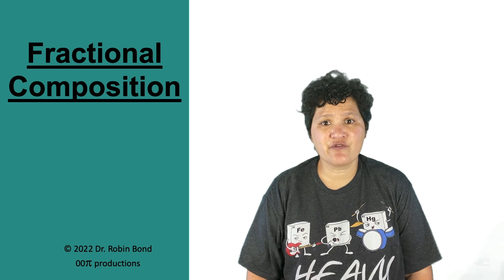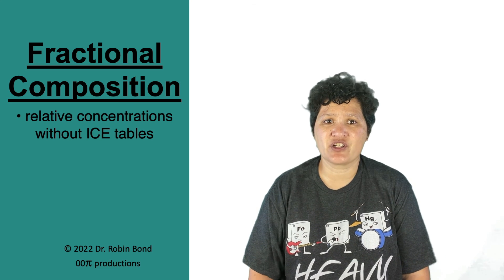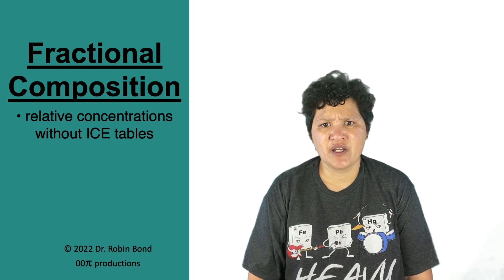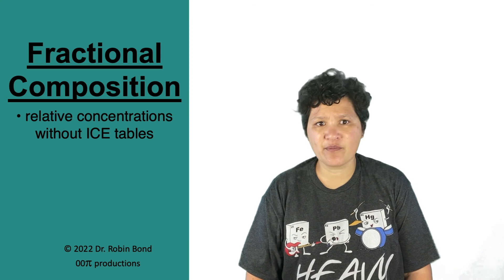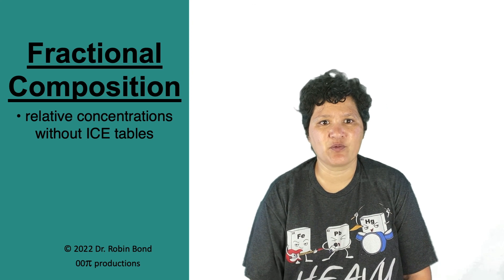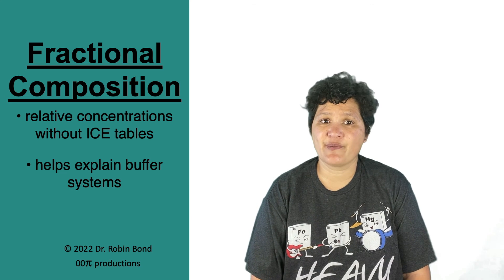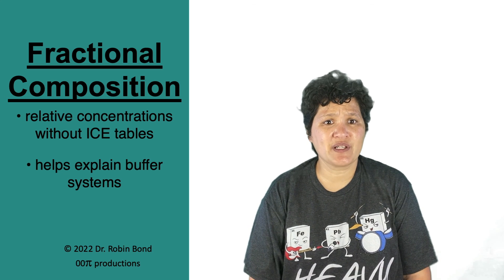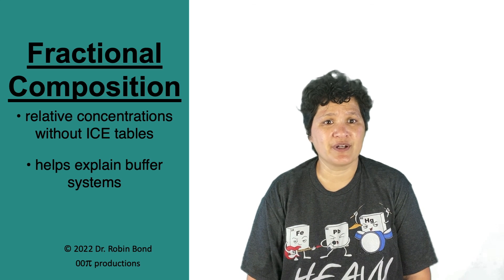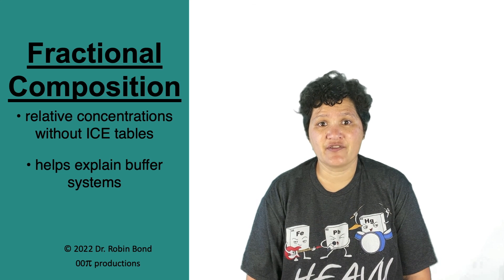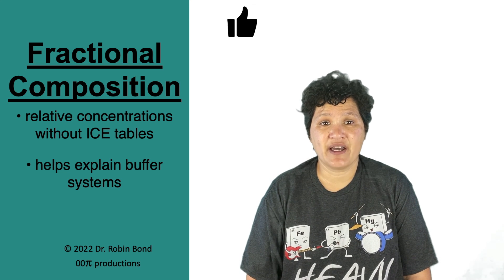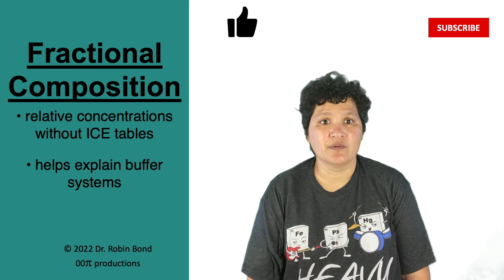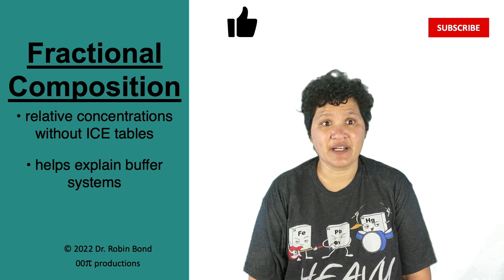In summary, the fractional composition formulas help us easily find relative concentrations of a weak acid and a conjugate base at a given pH without ice tables. Notice I say relative concentration. We're talking more about the relationship between the two concentrations than outright concentrations. Among other things, this information helps us understand buffer systems. The material we've covered in this video also forms an important foundation for what we're going to cover next, the fractional composition of diprotic acids. I'll drop a link to that video in the card on the screen as well as in the description below. I hope this was helpful and I look forward to seeing you again soon.